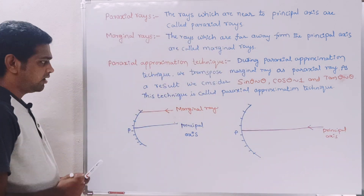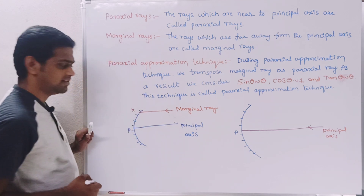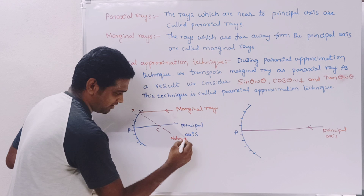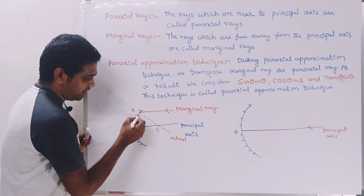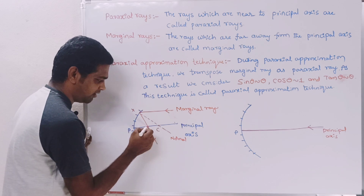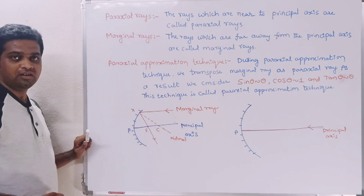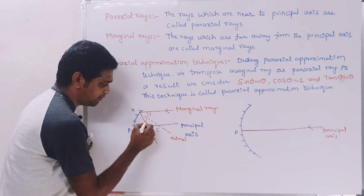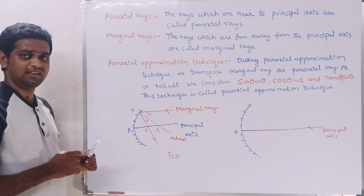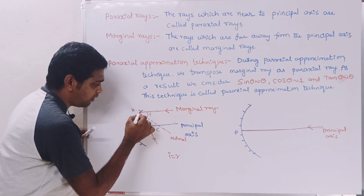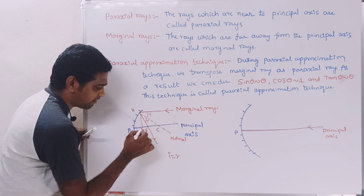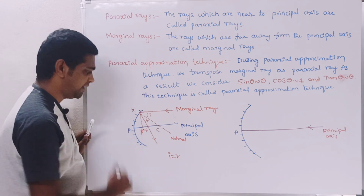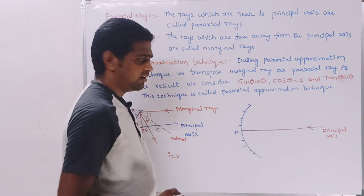Now try to draw the normal at the point of incidence — let's call it point X. The normal passes through the center of curvature. The reflected ray will pass through the focus. This gives us the angle of incidence and the angle of reflection, where i equals r. I then draw a perpendicular line from point X onto the principal axis, and the intersection point is called P-dash.